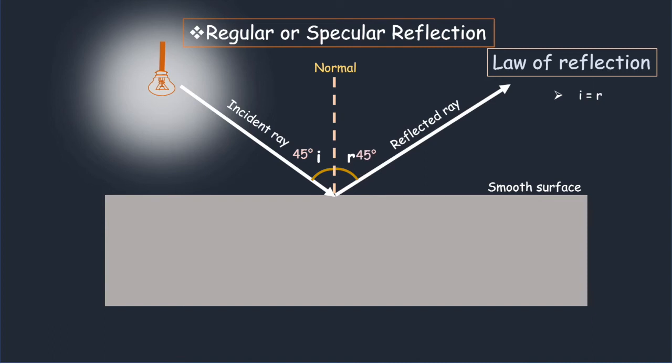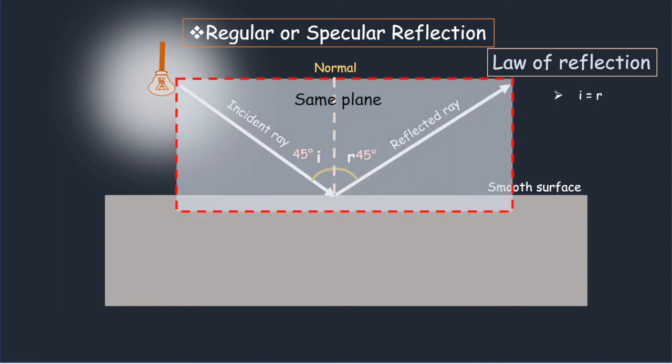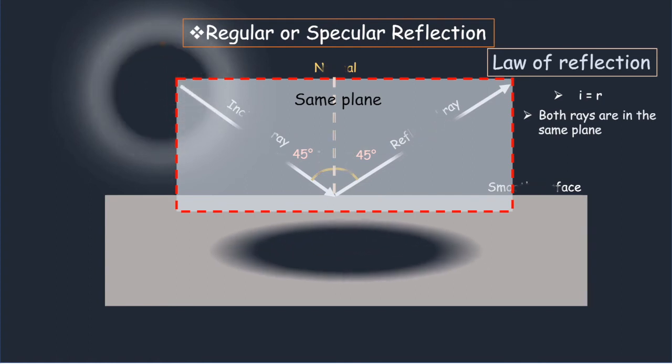The law of reflection also states that when a light ray is incident on a plane surface, then the incident ray, the reflected ray, and the normal to the surface of the smooth mirror all lie in the same plane.